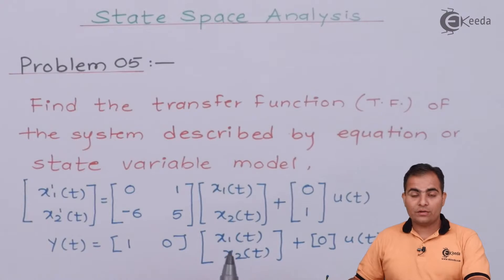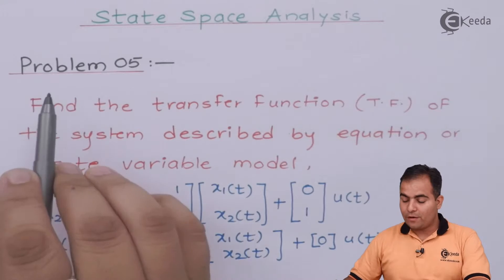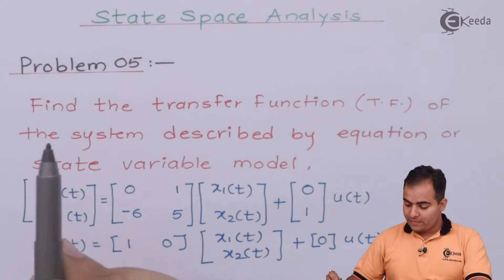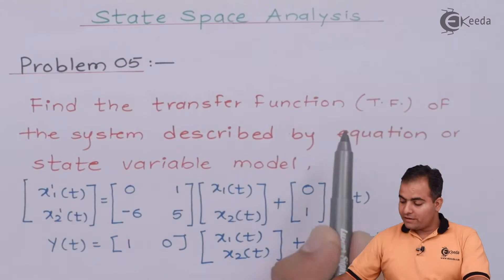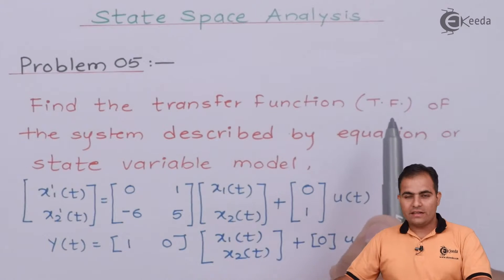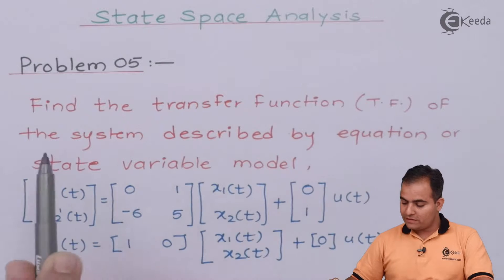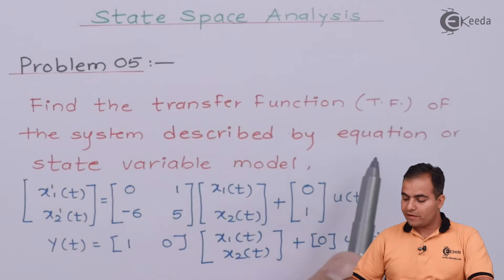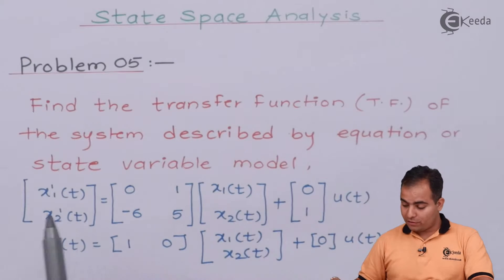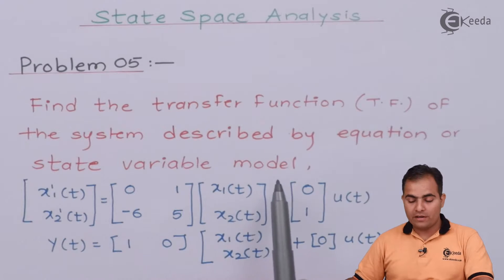So first of all, the question. Problem number 5: find the transfer function — in short, we can write TF — of this system, which is described by the following state variable model.